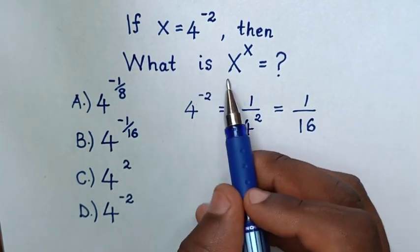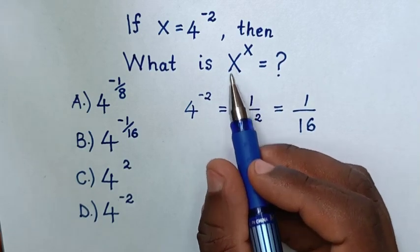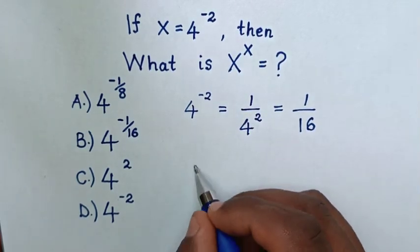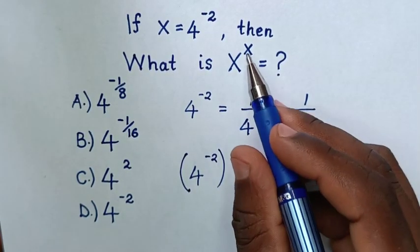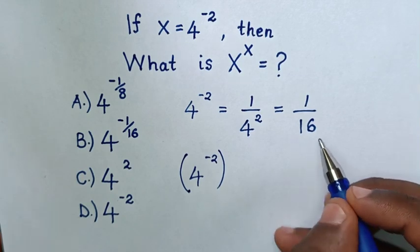Now, our problem is asking what is x power of x, whereas x is 4 power of negative 2, then bracket power of x, which is same as 1 over 16.